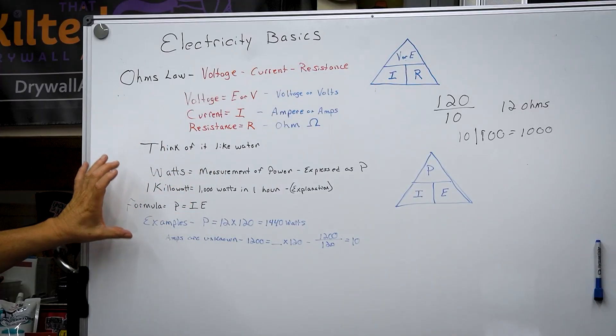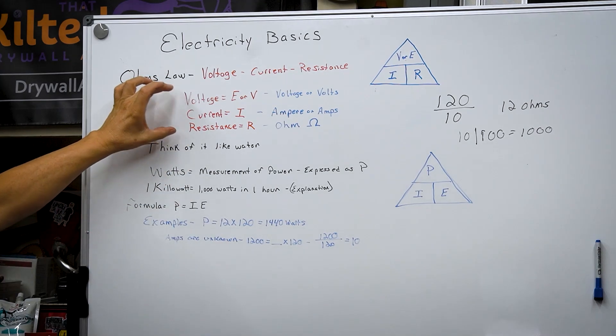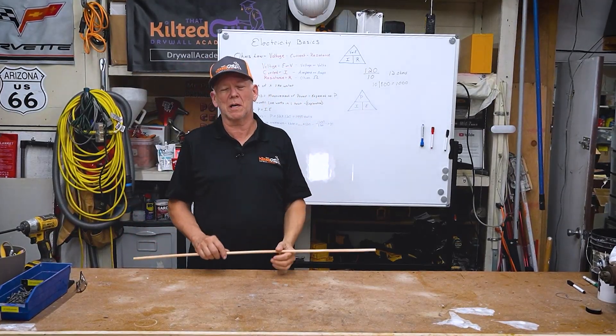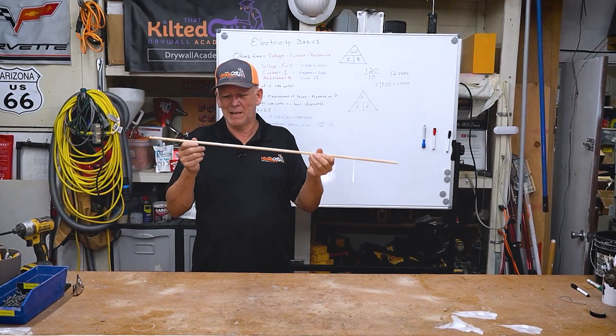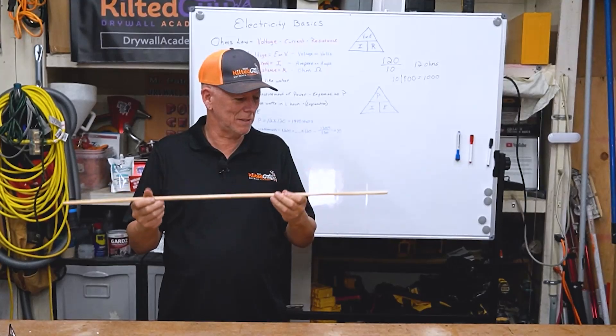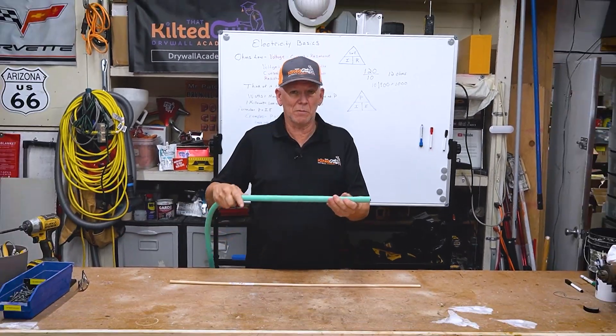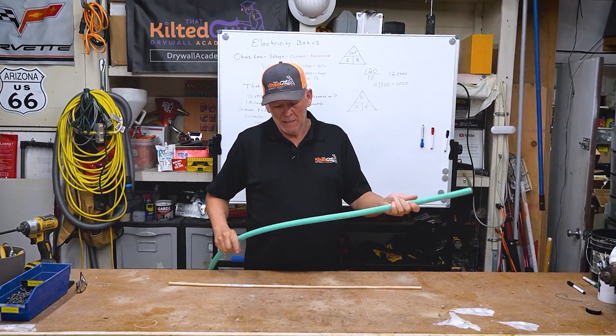You all have heard the term watts, right? Your air conditioner uses 1400 watts, or you've got a toaster that uses 1400 watts, your microwave. That's what we most commonly talk about when we talk about the electrical consumption. But first of all, let me explain how to think of all of this easier. We're going to think of it like water.